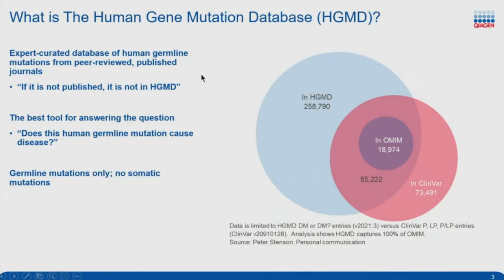So what is the Human Gene Mutation Database? It is an expert-curated database of human germline mutations coming from peer-reviewed published journals. These are both de novo and inherited mutations that have significant evidence of pathogenicity. Here on the right-hand side, you can see a Venn diagram comparing the content between HGMD, OMIM, and ClinVar. You can see that all of the content from OMIM is in HGMD, and nearly 35% of the ClinVar entries are also found within HGMD. We like to say that if it's not published, it's not in HGMD.